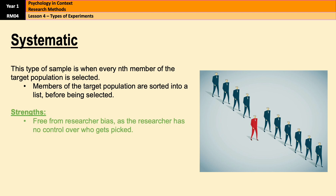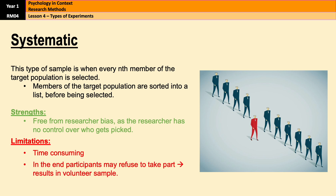A strength of systematic sampling is that it isn't impacted by researcher bias, because once the sampling frame is produced the researcher has no control over who gets picked. It's also relatively straightforward to carry out. However, a limitation is that after you have every nth person on the list they can still choose not to take part, which leaves you with more of a volunteer sample and all the problems that brings. Also, preparing the sampling frame can be quite time consuming.